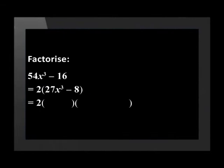We find the first bracket by cube rooting 27x³ and 8. This gives us 3x and -2.